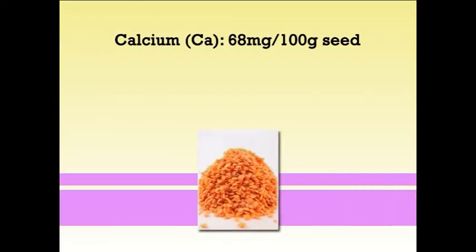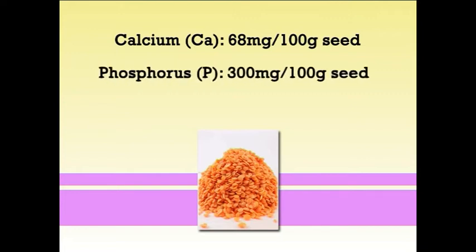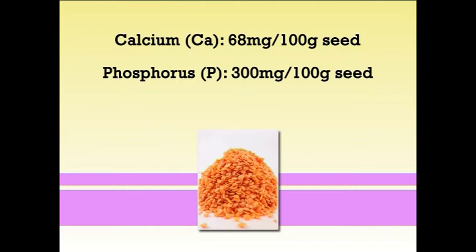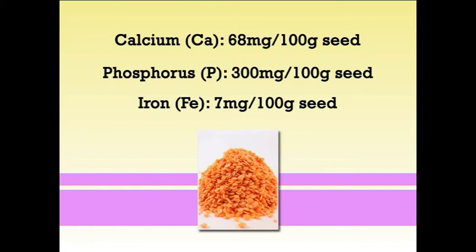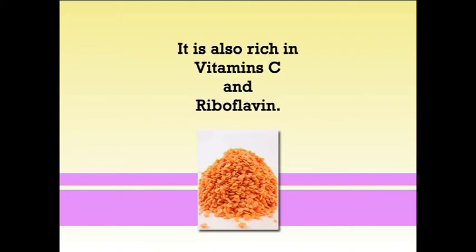Lentil is a rich source of calcium at 68 mg per 100 g of seed, phosphorus at 300 mg per 100 g of seed, and iron at 7 mg per 100 g of seed. It is also rich in vitamin C and riboflavin. It contributes about 6% of total pulse area as well as production in India. Lentil seeds also provide a source of starch for textiles and printing, and lentil flour is used for thickening of soups and is also mixed with wheat flour in bread and cake production.